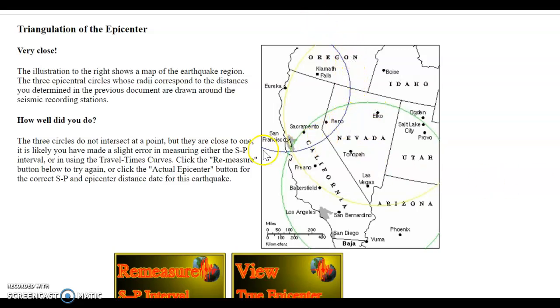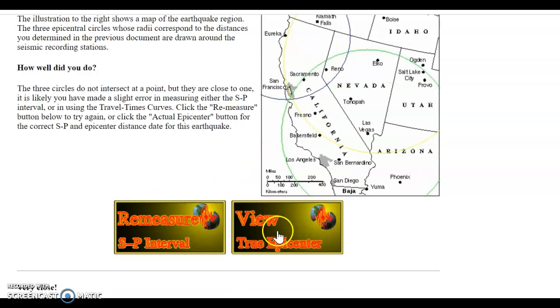Here's a purple line, a green line, a yellow line. And they are intersecting right on the south side of San Francisco. They have not met in a single dot, but that's a pretty small area there. It says, very close. How well did you do? The three circles do not intersect at a point, but they are close to one. It is likely you may have made a slight error in measuring, either the S-P interval or using the travel time curves. Click the remeasure button below to try again, or click the actual epicenter button for the correct S-P and epicenter distance data for this earthquake. So very close is pretty good. If you were in a hurry, you could take that.